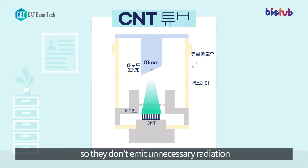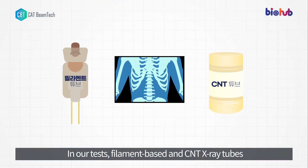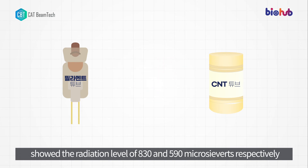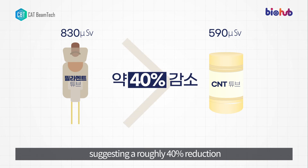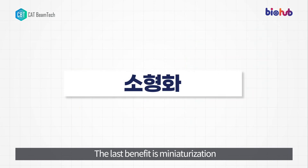So they don't emit unnecessary radiation. In our tests, filament-based and CNT X-ray tubes showed radiation levels of 830 and 590 microsieverts respectively, suggesting a roughly 40% reduction in radiation exposure with CNT X-ray tubes.